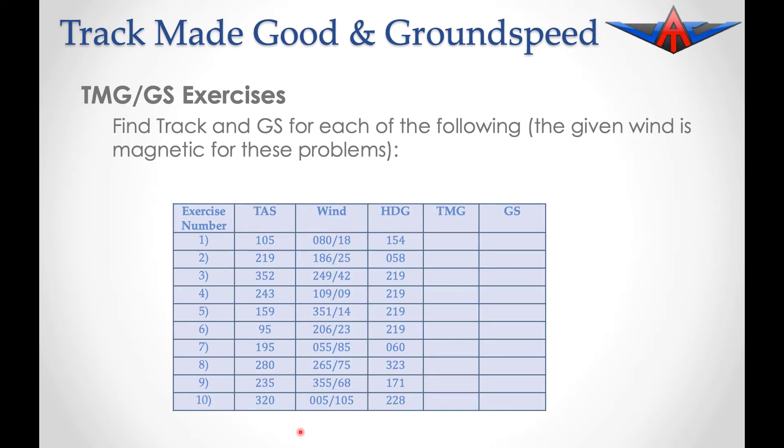Here are a set of exercises for you to try. What I suggest you do is pause in between each exercise. Pause while you do exercise number one, then resume to see your answer. Now repeat that same process, pausing between each exercise to check your answers. Hopefully you've now mastered the exercise of calculating track made good and ground speed. Good luck!